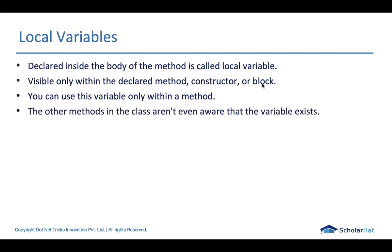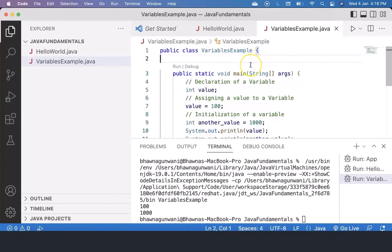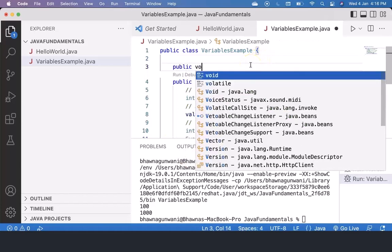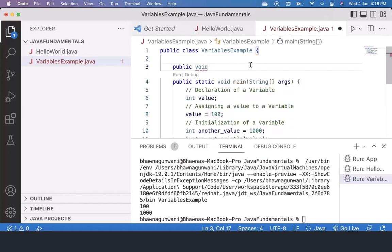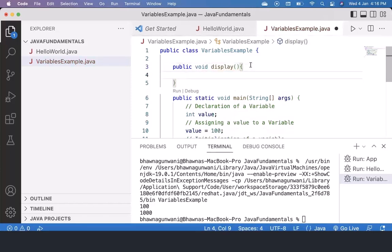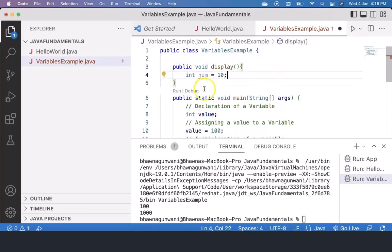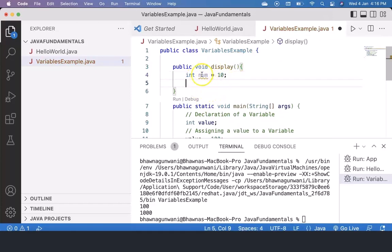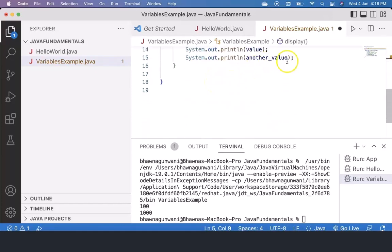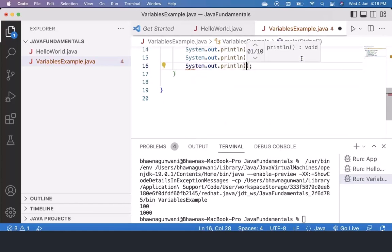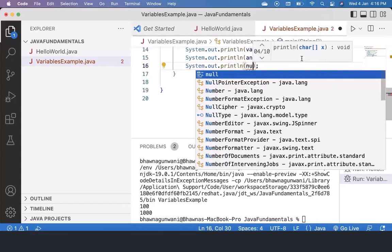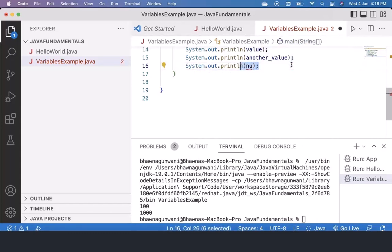Their existence remains to that particular block only. So for example, if I am going to create here a method called public void display, and if I am having a variable here, let's say int num equals to 10, so the scope of this num will be available to this particular method only. If we will try to access this num here in the main method, it will not be applicable. So that is how the local variables are accessible to a particular block where they have been declared.